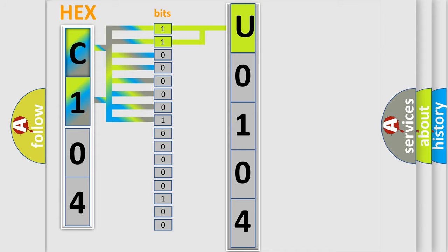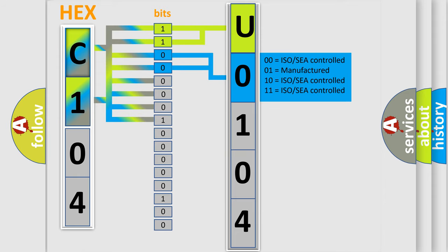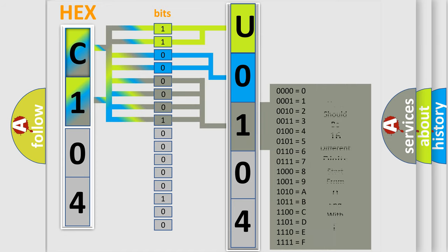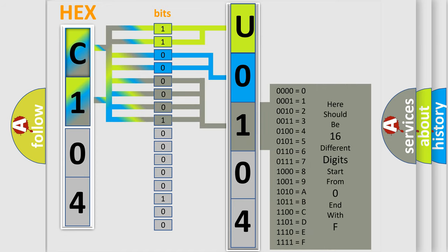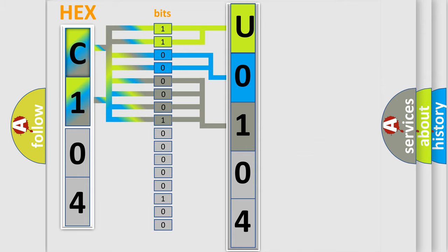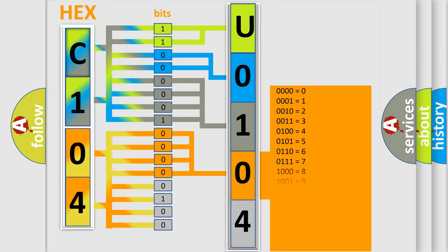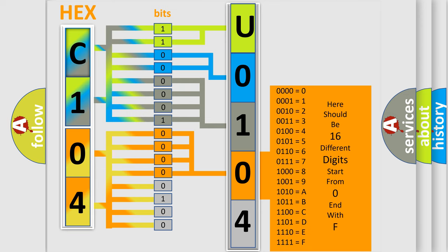The next two bits determine the second character. The last four bits of the first byte define the third character of the code. The second byte is composed of a combination of eight bits. The first four bits determine the fourth character of the code, and the combination of the last four bits defines the fifth character.